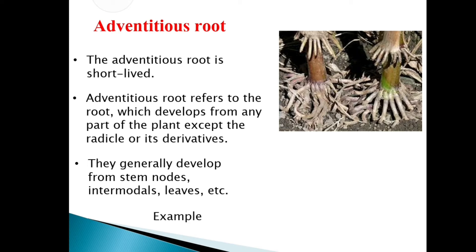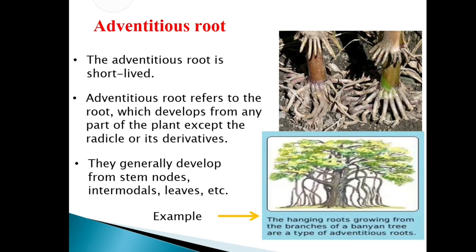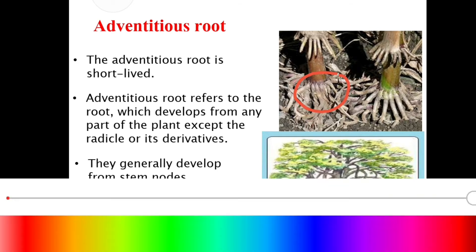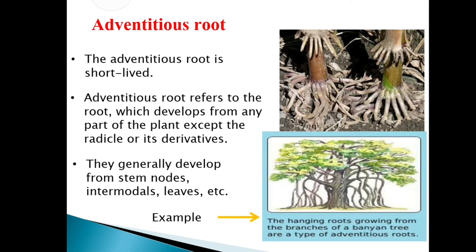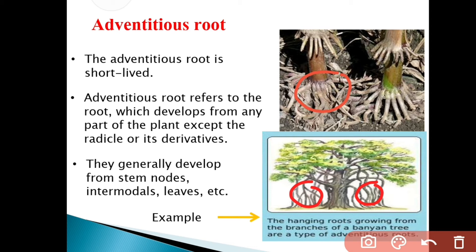An example is the banyan tree — the hanging roots. You can see in the picture that the roots are hanging and growing from the branches of the banyan tree. This is the type of adventitious root. The roots are growing from the branches, not from the radicle. Keep this in mind: the roots grow from branches, leaves, or stem — not from the radicle. This is the key difference of adventitious root.